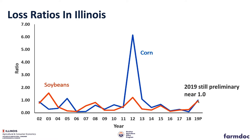The 2019 loss ratio might end up higher — maybe at the outside, 1.5. But in any case, it's not going to be anything near the losses experienced in 2012. So if we're concerned about rising premiums in the future because of 2019 performance, 2019, while it was a bad year, is still not like 2012.